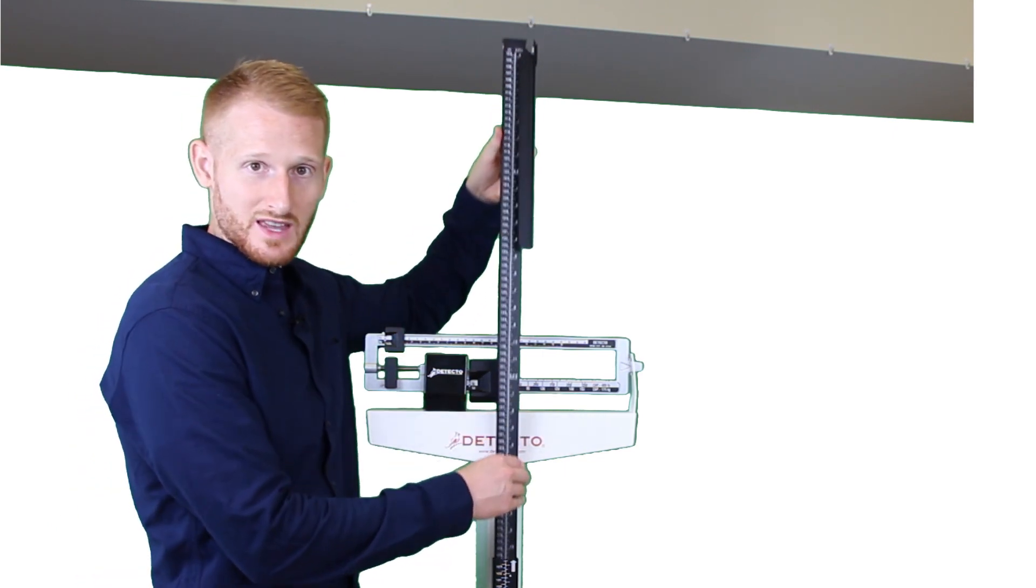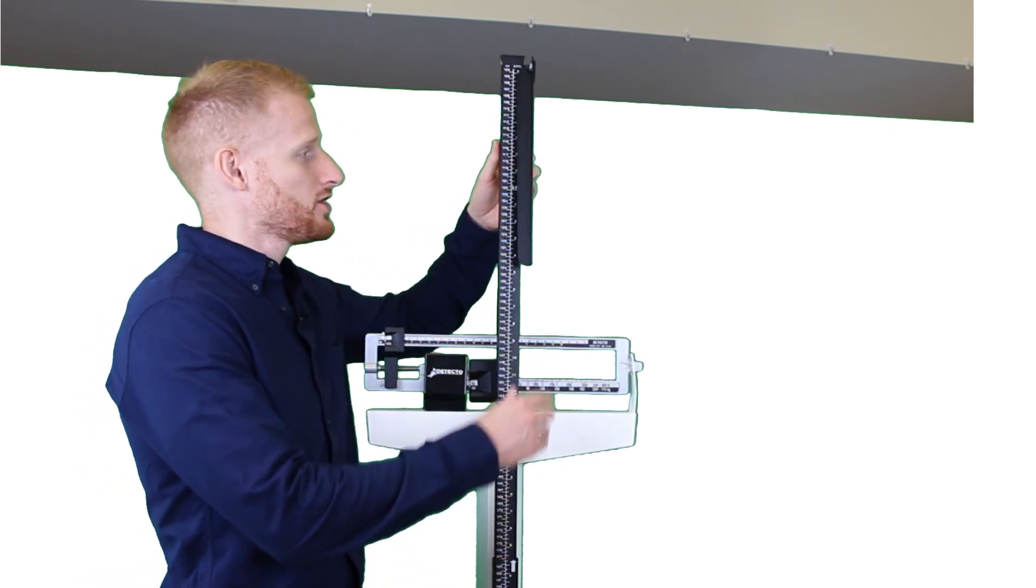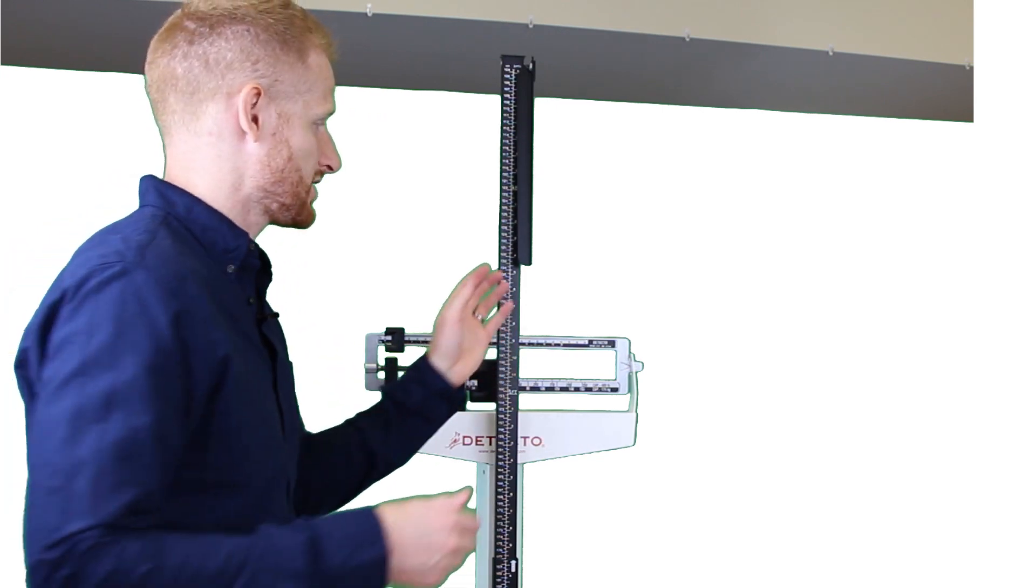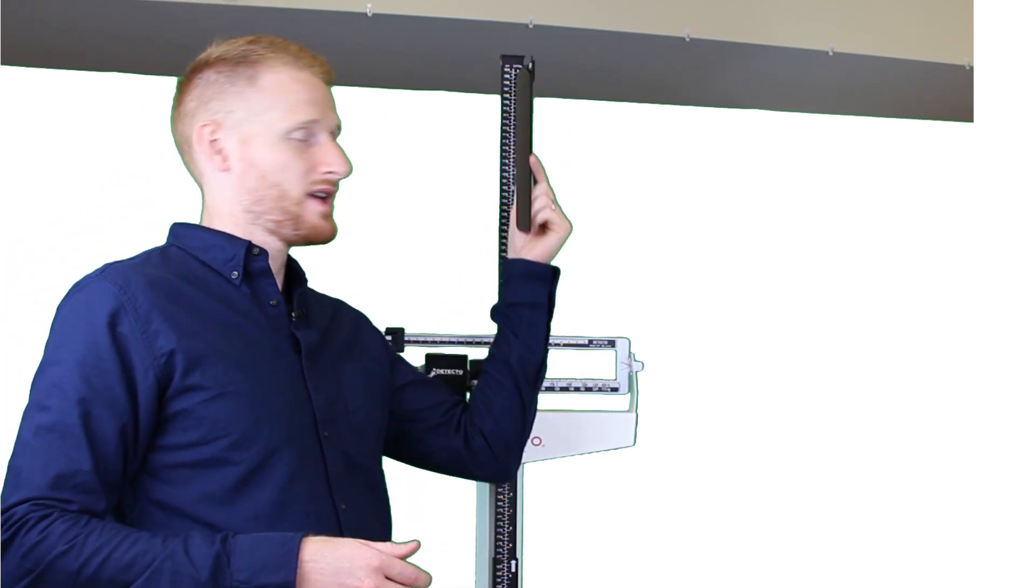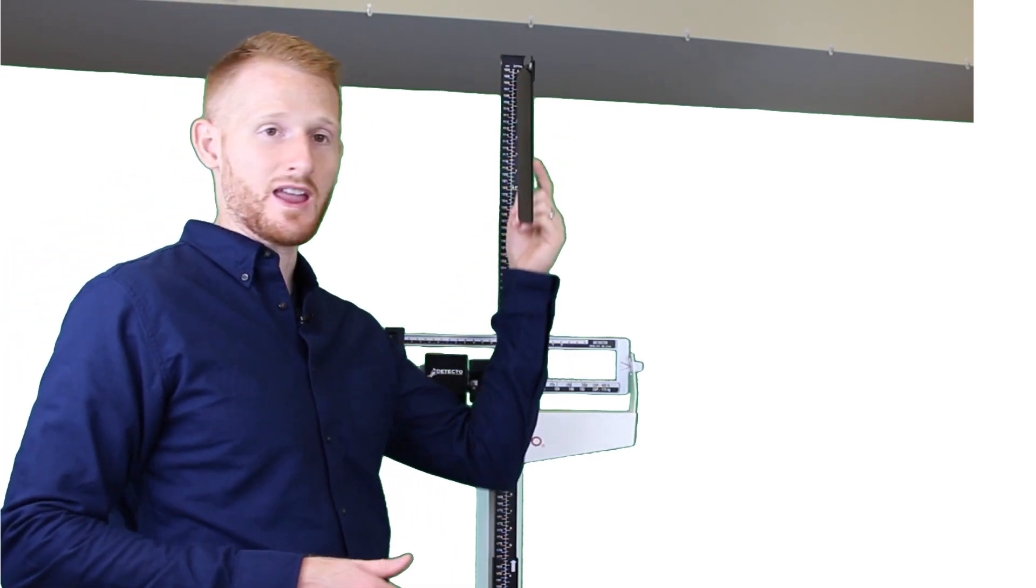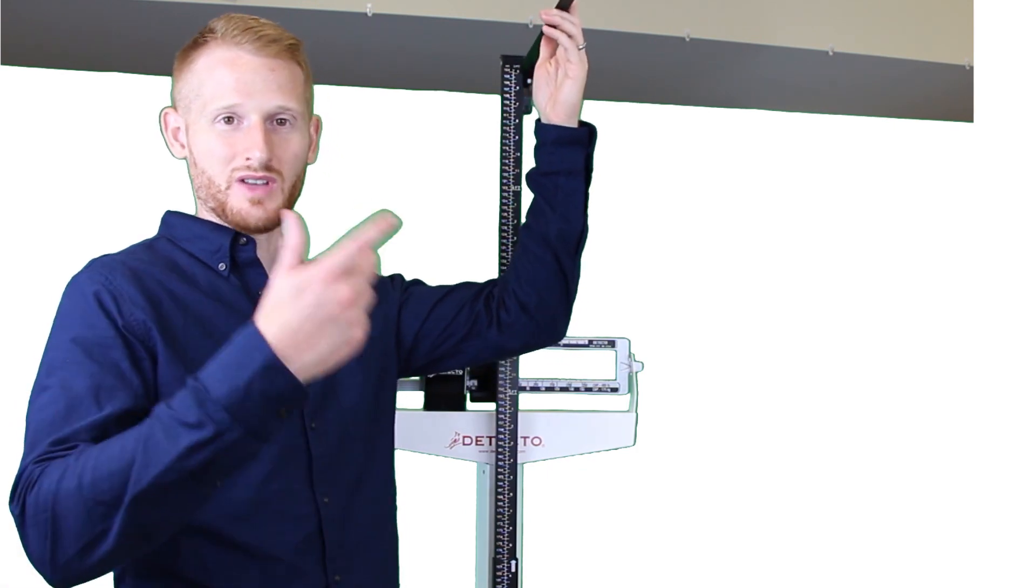So you have this part of the scale here that moves up and down. You're going to have the person, I'll just do it on myself for now, you're going to have the person step up. Make sure that you take this black lever and lift it up well above their head so you don't hit them with it.